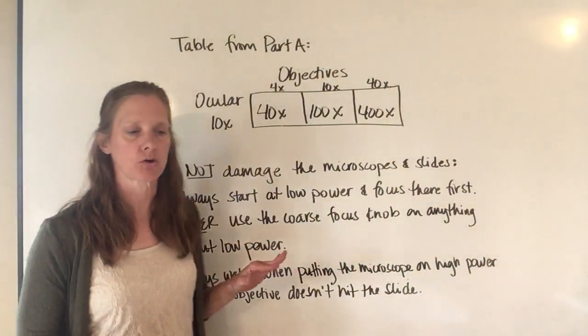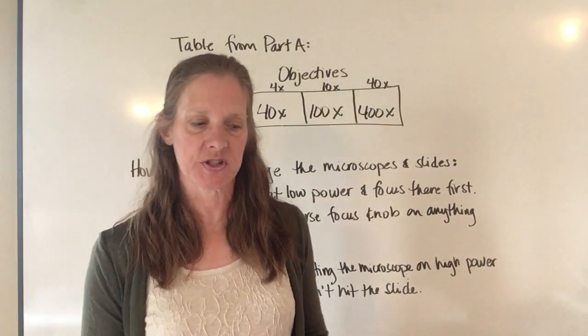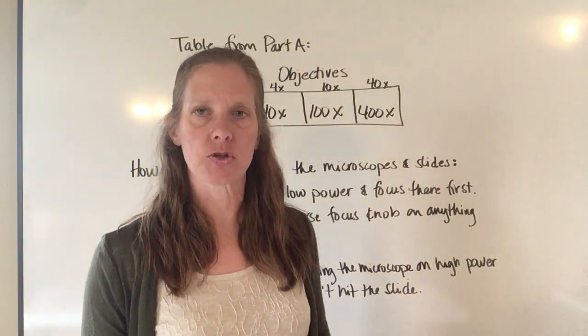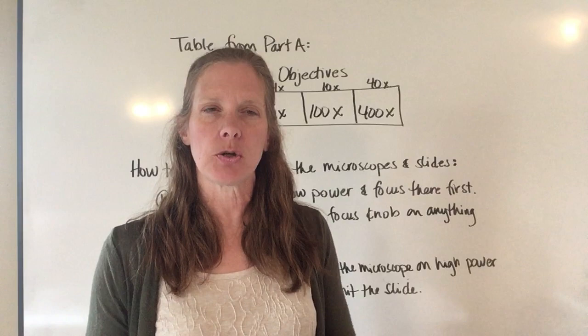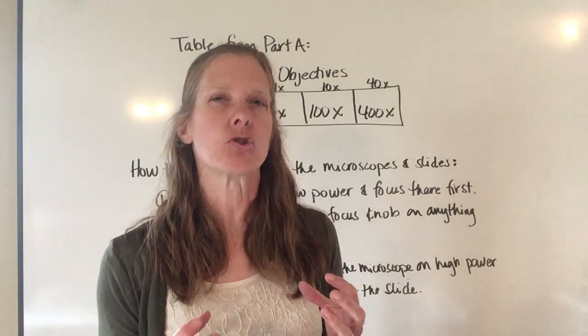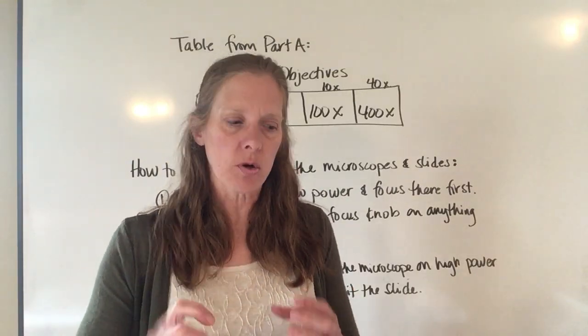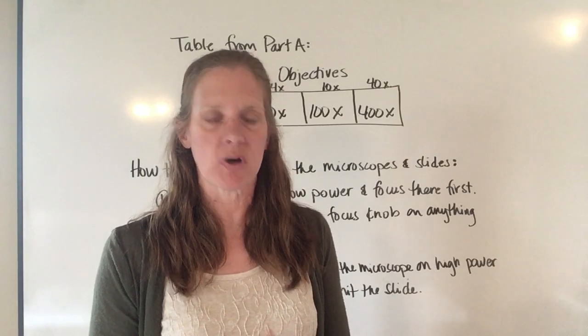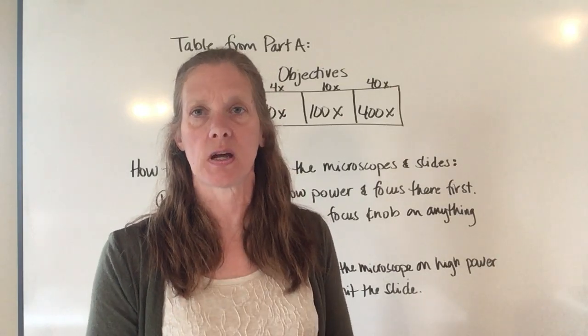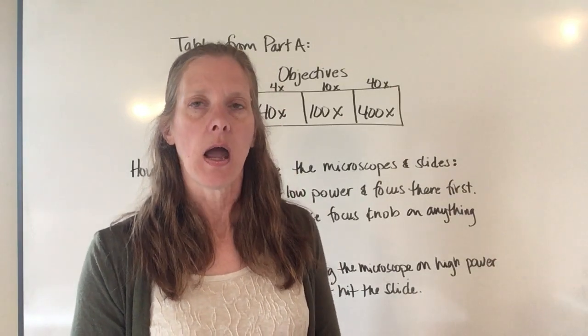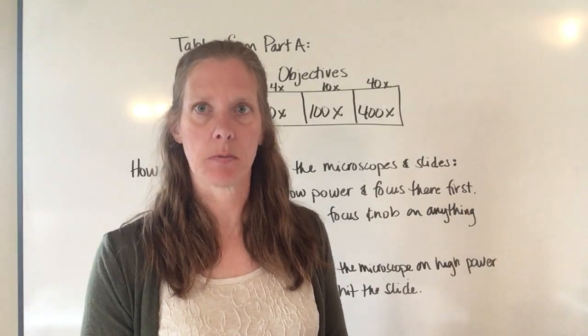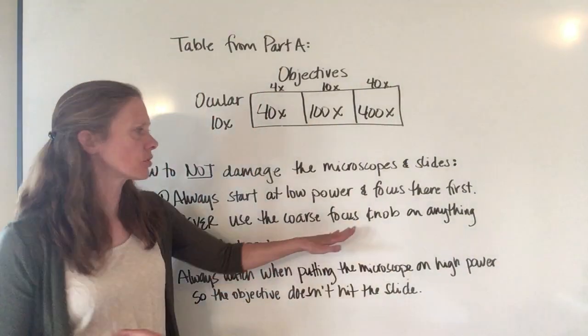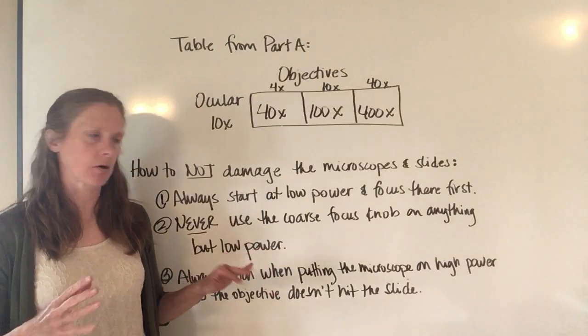When using the coarse focus, only do that on low power. Don't ever turn that coarse focus knob when you get to higher powers. Otherwise you hear this sickening crunch and realize you've lowered the objective into the slide, crunched the slide, and might have crunched the objective lens, which is not cool. Only use the coarse focus knob on low power.